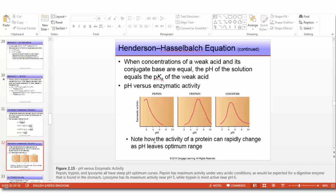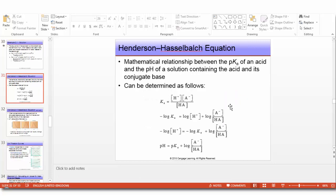This figure shows how the activities of 3 enzymes are affected by pH. Note that each one has a peak activity that falls off rapidly as the pH is changed from the optimum. For pepsin, the pH for maximum activity is around 2. For trypsin it is around 6, and for lysozyme it's about 5. Pepsin, trypsin, and lysozyme all have steep pH optimum curves. Pepsin has maximum activity under very acidic conditions, which is expected because pepsin is a digestive enzyme found in the stomach.